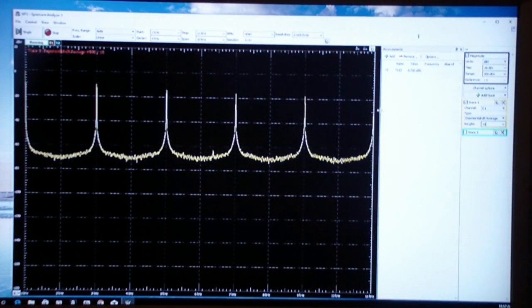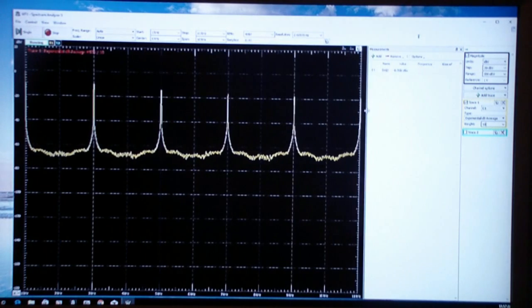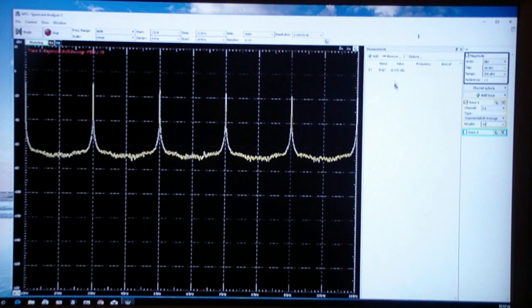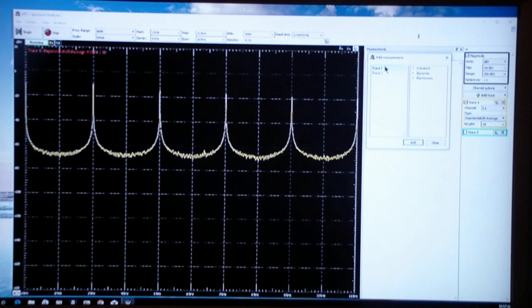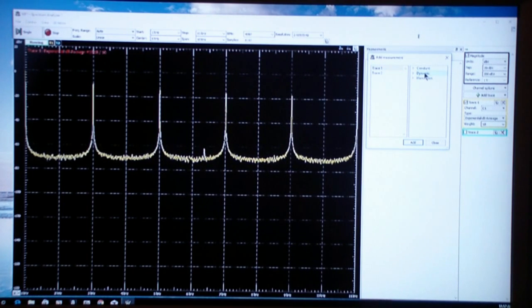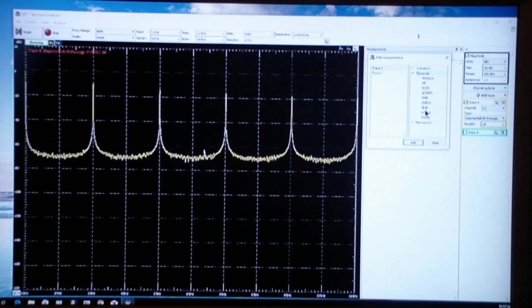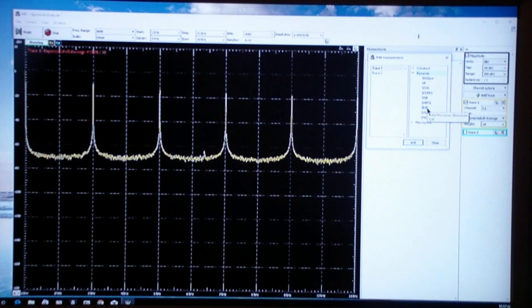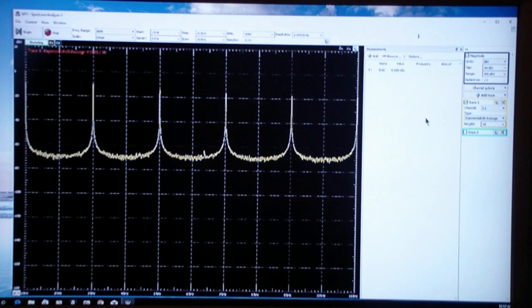You see over here in this window a measurement called THD. You get to that by clicking on Add, then the trace, in this case trace one, then dynamic, and right down here you see THD—that's total harmonic distortion.